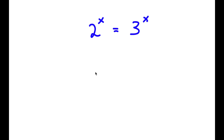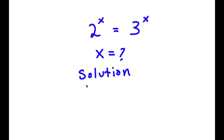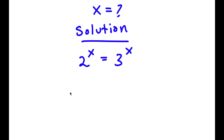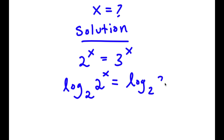In this problem, I have 2 to the power of x is equal to 3 to the power of x. I want to find the value of x. For my solution, I'm going to first start by writing 2 to the power of x is equal to 3 to the power of x, and I'm going to take the log of base 2 on both sides. So now I have log base 2 of 2 to the power of x is equal to log base 2 of 3 to the power of x.